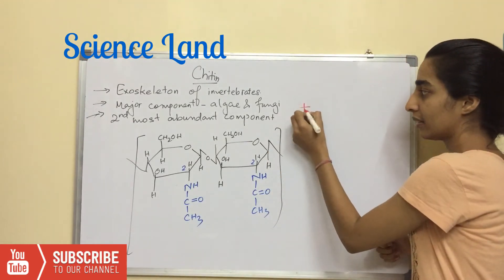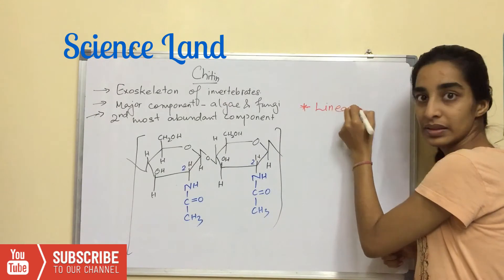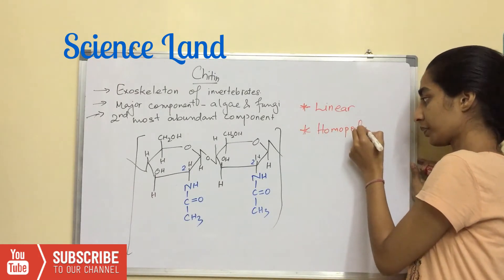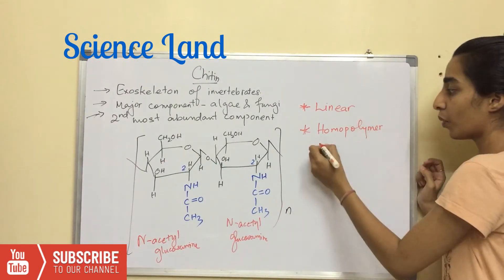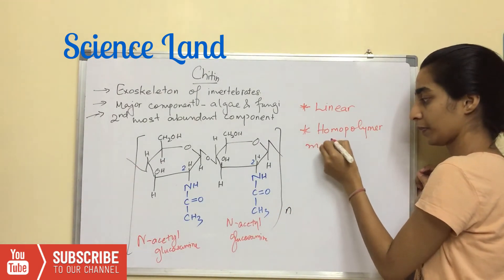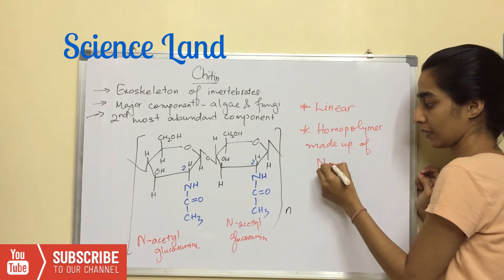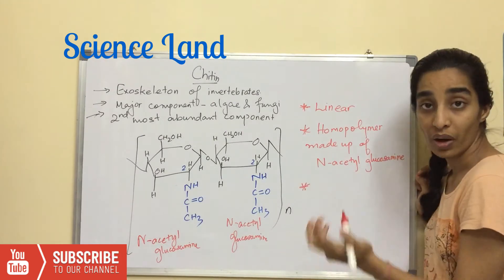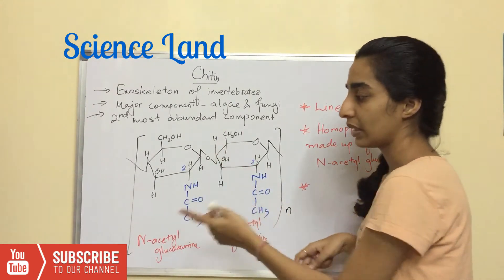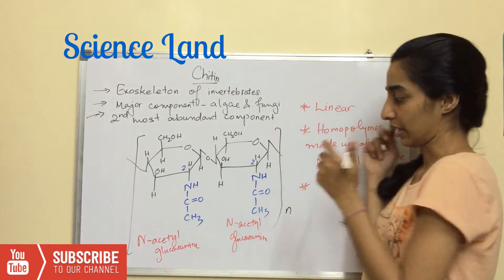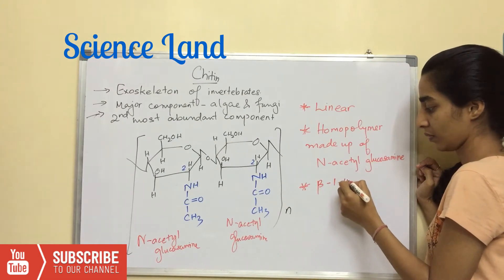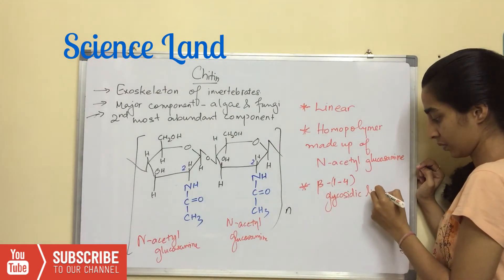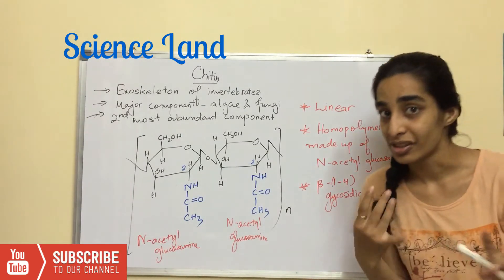So we have a linear polymer similar to cellulose — a homopolymer made up of N-acetylglucosamine. The bond between both sugar units is a beta 1-4 glycosidic linkage. It is not digested by humans.